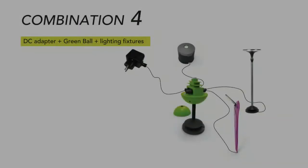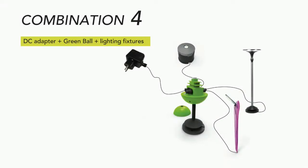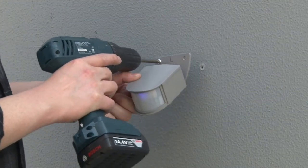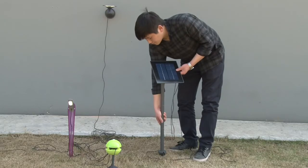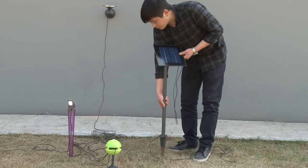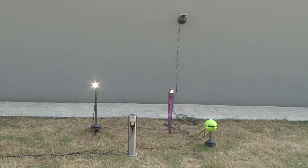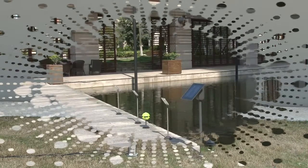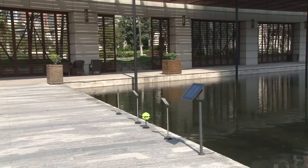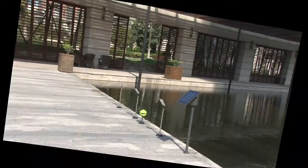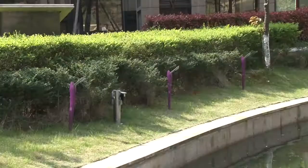Combination four: green bulb plus lighting fixtures. The green bulb can function with just the adapter, without the solar panel and the sensor. Now enjoy your SunConnect hybrid system.